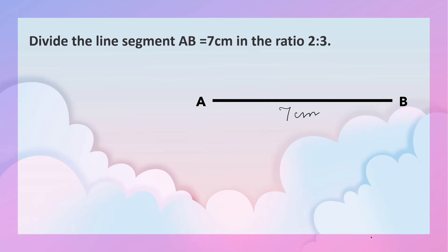Draw another line segment AX which makes an acute angle with AB. Now make 5 equal marks on AX and name them as A1, A2, A3, A4, A5.